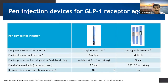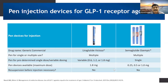Here are the pen injection devices for GLP-1 receptor agonists. Liraglutide is available as Victoza and semaglutide as Ozempic. These can be used multiple times — it is not just a single-use device, as you can reload the cartridge and based on dosing, you can repeatedly use the medication. The pen allows for predefined single dose or variable dosing; you can use 0.6, 1.2, or 1.8 milligrams. An 1.8 milligram dose is available, and single-dose pens are also available in the case of semaglutide.